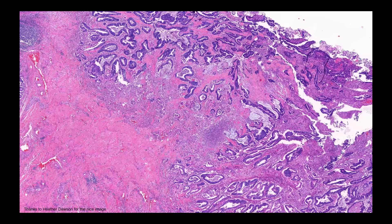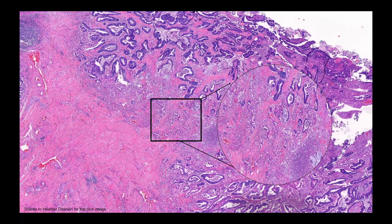Looking at H&E images of colorectal cancer, the invasion front reveals a complex network — not just cancer cells but a rich inflammatory and immune reaction against the tumour. Tumour buds can appear almost like protrusions dripping off the main tumour mass, embedded within an amazing microcommunity of different cell types.